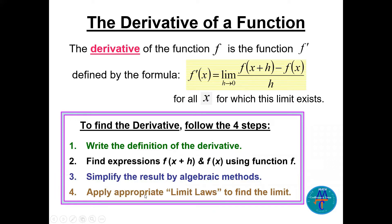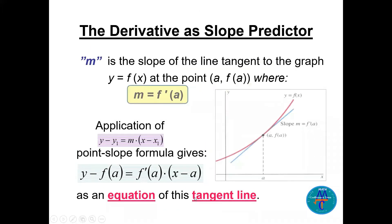The derivative acts as a slope predictor. If we have a curve and need a tangent line at a point (a, f(a)), the slope of the tangent line will be m. We can then use the formula for the equation of a line: y minus y₁ equals m times (x minus x₁), where x₁ and y₁ is the point and m is the slope, which is f prime at a.